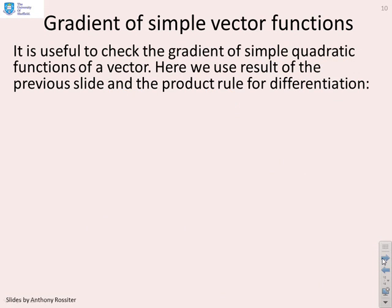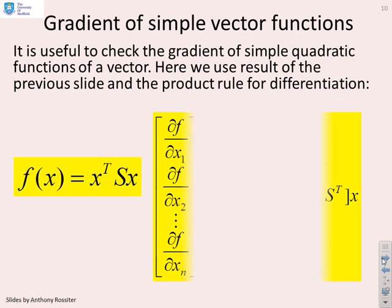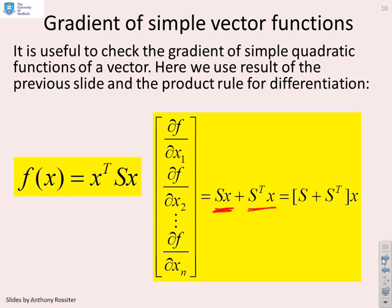For a quadratic function f(x) = x^T S x, it's straightforward to show that the gradient is (S + S^T) x. These are simple background maths results that we're going to use in the optimization.